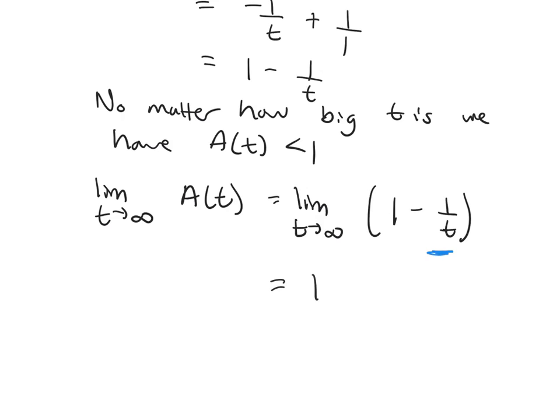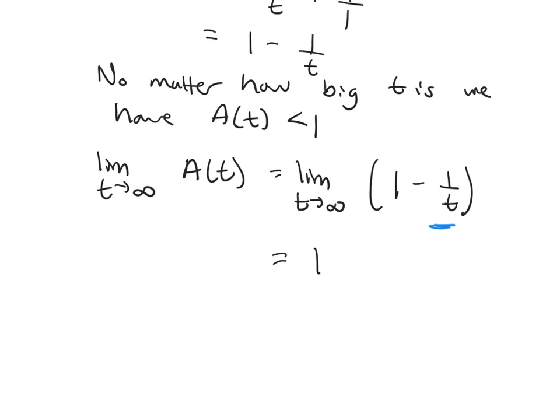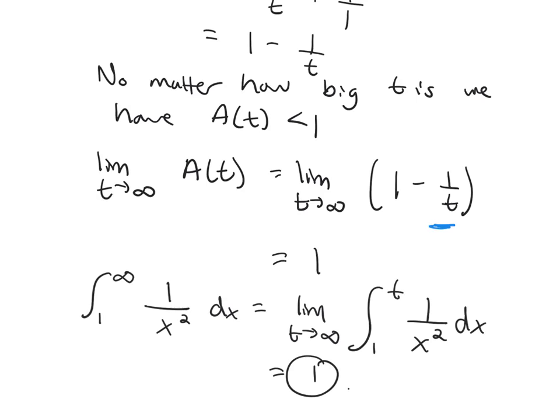So you just told me that that area, as I let t get larger, it becomes 1. So it seems kind of crazy because we said at the beginning it should have infinite area, but now we're saying that it has a finite amount of area. So we can now say that if we integrate from 1 to infinity, 1 over x squared dx, this was the same thing as the limit as t goes to infinity, 1 to t, which we calculated to be 1.